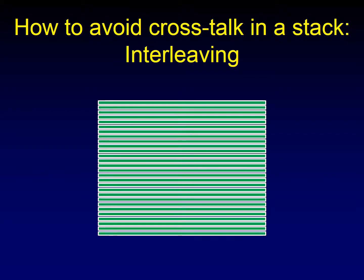We have a real problem with crosstalk when we are looking at a stack of images, because every single one of these images is right next to two other images. So there's going to be a tremendous amount of crosstalk and we won't be able to get any signal out of these images. How are we going to deal with that? We're going to do something called interleaving.